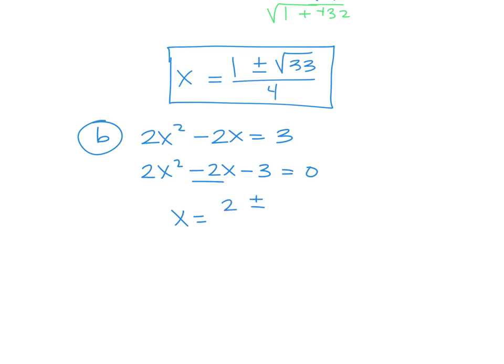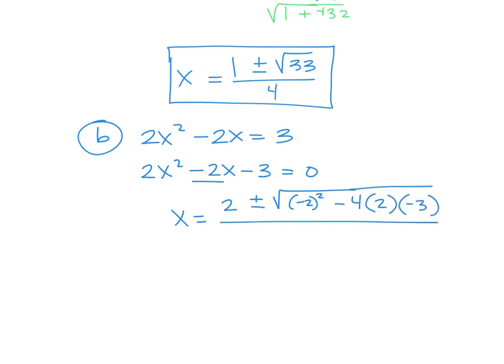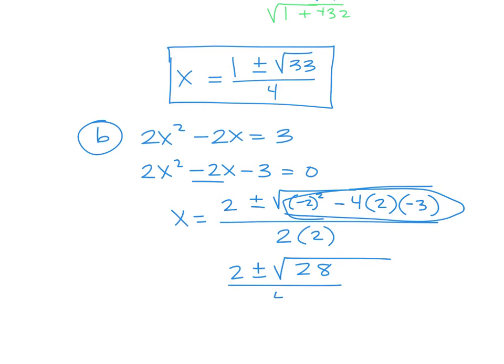Now plug it into the quadratic formula. x equals negative b — a positive two, opposite of negative two — plus or minus the square root of b squared. Negative two squared is four. If you don't put those parentheses in, your calculator will say it's negative four and your calculator is wrong. So b squared minus four times a, which is two, times c, which is negative three, all over two times a. So you get two plus or minus the square root of four minus negative 24, which gives you four plus 24 equals 28, over four.